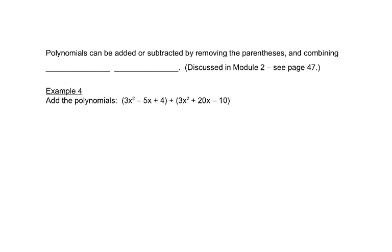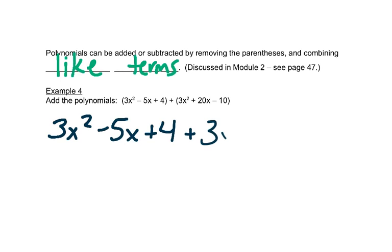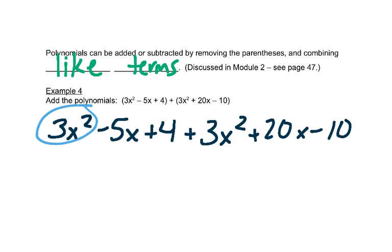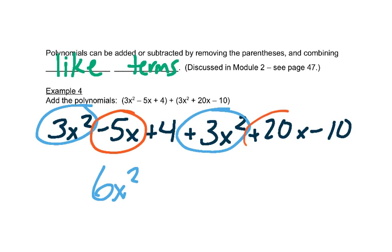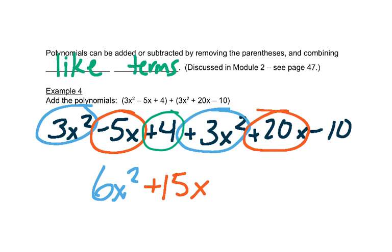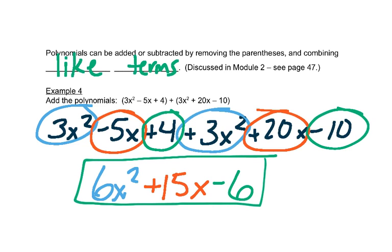Polynomials can be added or subtracted by removing the parentheses and then combining like terms — we talked about that in Module 2. Here, there's nothing to distribute to remove the parentheses, so we can just write it without them. Then we combine like terms: 3x squared plus 3x squared is 6x squared; minus 5x plus 20x is 15x; and 4 minus 10 is negative 6. That's our answer.